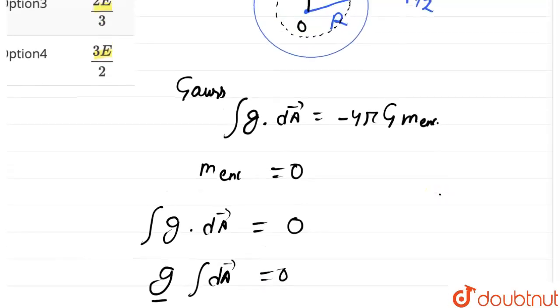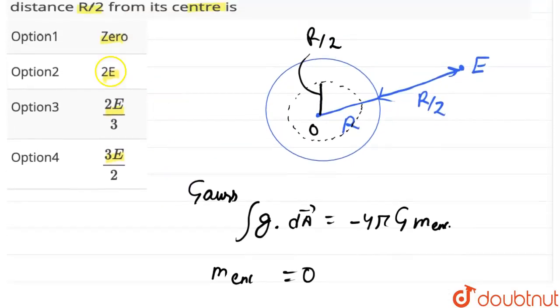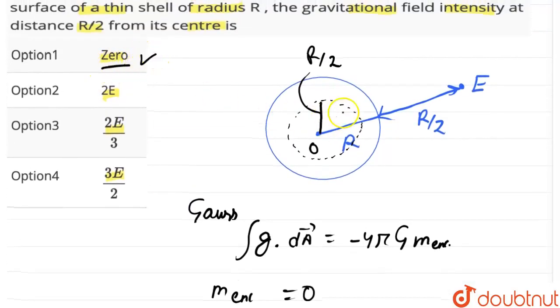So, let us check out our options. Option 1 would be the correct answer. Gravitational field intensity inside is 0 as there is no mass enclosed inside. Okay? Thank you.